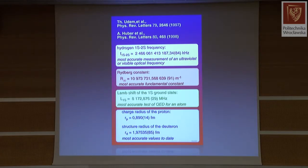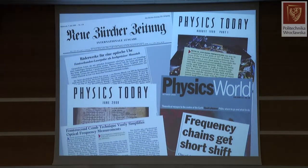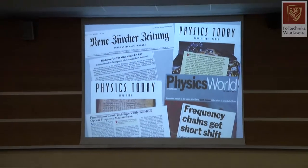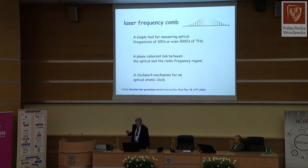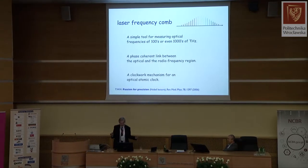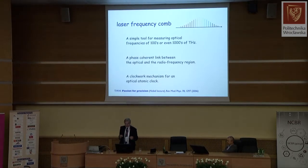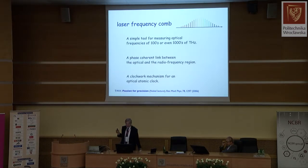This took 10 years of effort, but nowadays it can be done more or less in an afternoon, because we have a new tool that burst onto the scene around 1999: the laser frequency comb. For the first time it provided a simple tool for measuring the frequency of light — a phase-coherent link between the optical and the radio frequency region — and it can be used as a clockwork mechanism for optical atomic clocks.